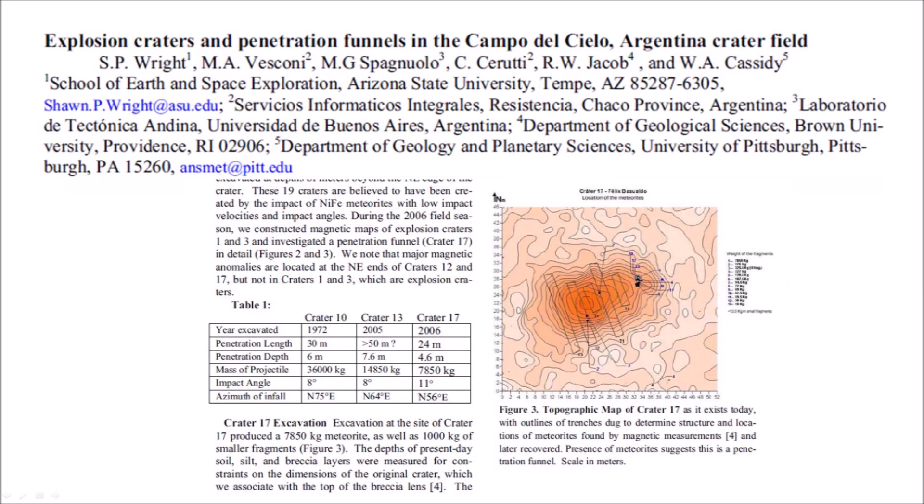The 2007 paper describes explosion craters and penetration funnels in the Campo del Cielo, Argentina crater field. Sixteen craters have been identified as penetration funnels by their elongated shapes and magnetic anomalies associated with them. All of these craters have distinct elongations and smaller diameters and depth-to-diameter ratios, with large magnetic anomalies below the northeast rim. In each, a large mass of iron has been excavated beyond the northeast edge of the crater, believed to have been created by nickel-iron meteorites with low impact velocities and impact angles.